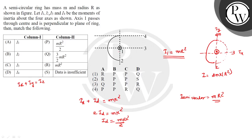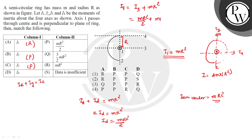So I1 matches R, and I2 and I3 have value MR²/2, which means they match P. For I4, using the parallel axis theorem: I4 = I3 + MR² = MR²/2 + MR² = 3/2 MR².